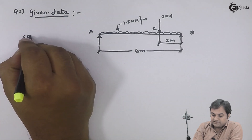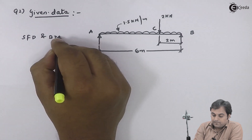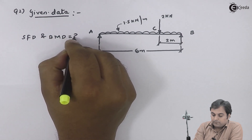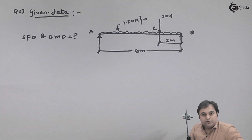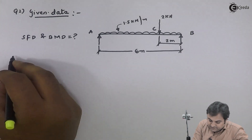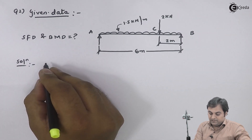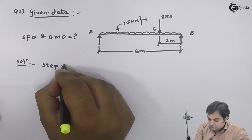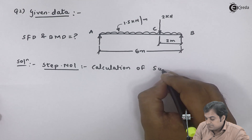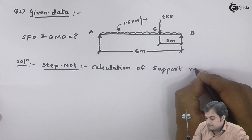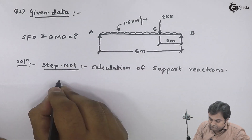We are told to draw the SF and BM diagrams — SFD and BMD. We will start this question by finding the support reactions first. Step number one is calculation of support reactions. For that, I have to consider the beam in equilibrium.